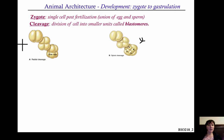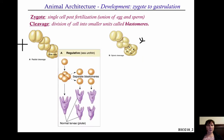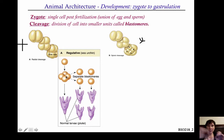There's a consequence to this cleavage type. If you exhibit radial cleavage, you then exhibit what's called regulative development. What that means is that as early as the four-cell stage, if you were to split off one of these cells, it would continue to divide and it would form a fully formed, normal adult.